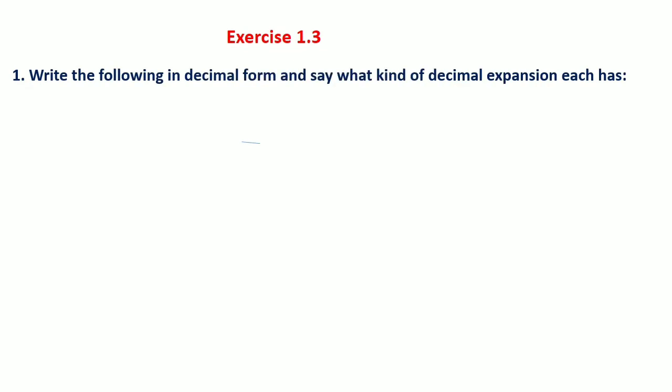The first question in Exercise 1.3 reads: write the following in decimal form and say what kind of decimal expansion each has. The first question is 36 upon 100. This can easily be converted to decimal form without actual division — since the denominator is 1 followed by two zeros, the decimal point is placed after two digits, giving 0.36.